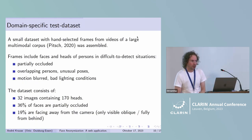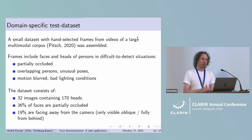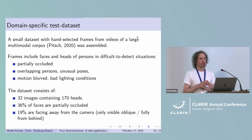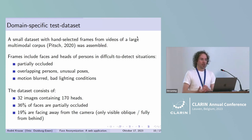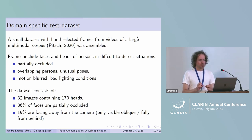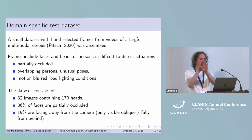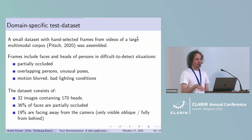To test the quality of the face detectors and the combined approach of face detection with pose detection, we created a small dataset with hand-selected images from our videos — and these videos were very difficult. We selected specifically frames with humans in difficult-to-detect situations, like partially occluded, or persons that overlap with each other, or persons in unusual poses. With that, we could nicely test the quality of these face detectors.